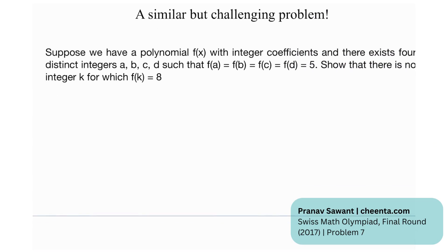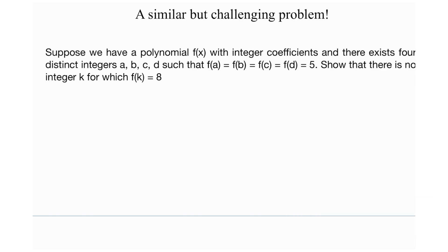We also have a related but challenging problem: suppose f(x) is a polynomial with integer coefficients and there exist four distinct integers a, b, c, d such that f(a) = f(b) = f(c) = f(d) = 5. Show that there is no integer k for which f(k) = 8.